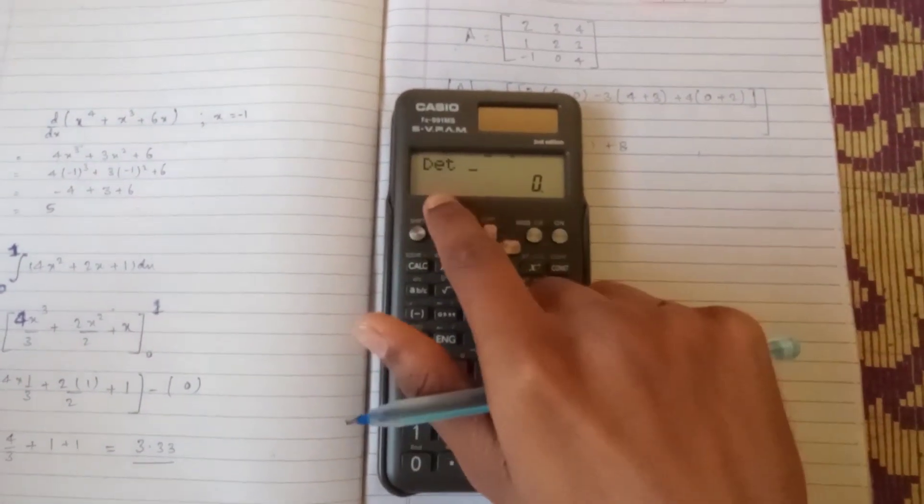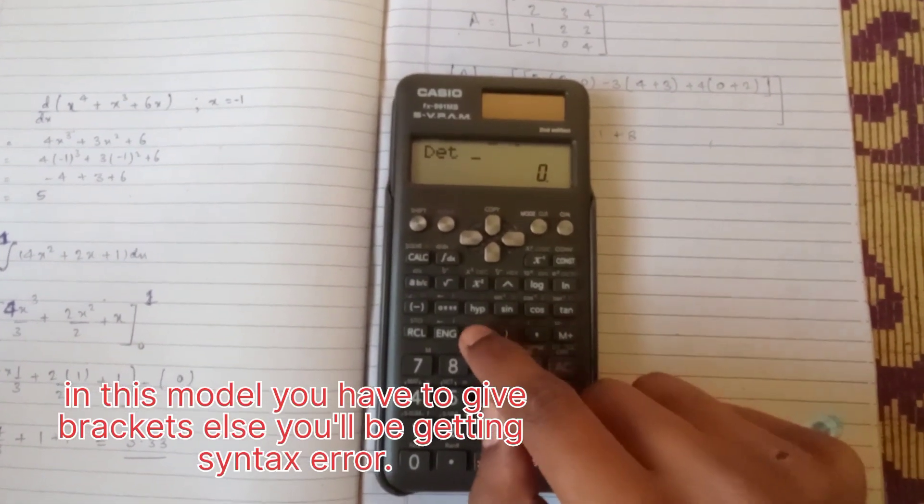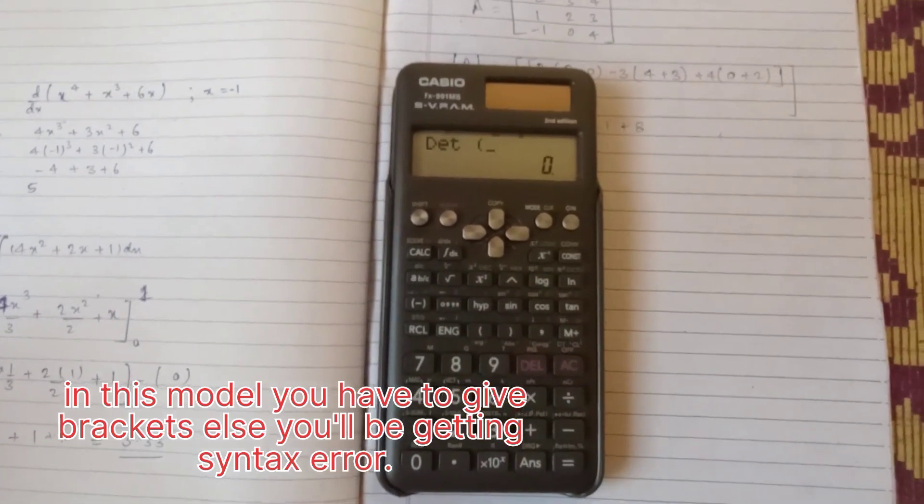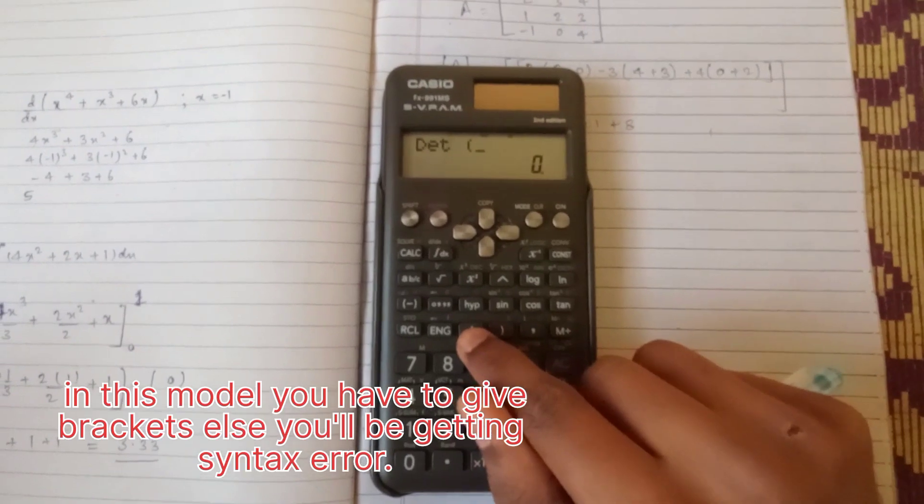Press 1 and the determinant is showing in the calculator. Now you have to press bracket, or else you will be getting syntax error in this calculator. Press the bracket.